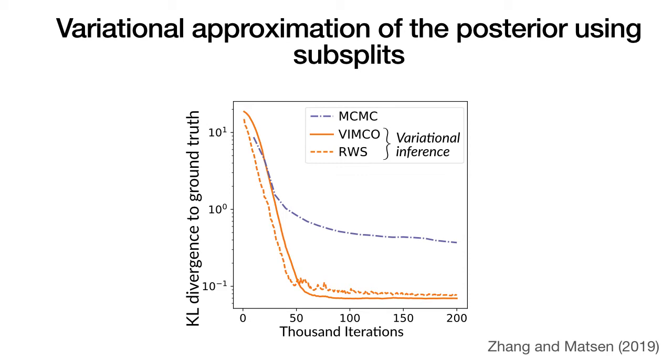The plot demonstrates that subsplits are useful building blocks for modeling trees, allowing parameter sharing across different trees. And one of our experiments with the Ebola virus data on 1,570 sequences had 42,304 PCSPs and it spanned over 10 to the power of 241 trees. So this goes to show that these PCSPs work in a combinatorial fashion and can indeed span a large number of trees.